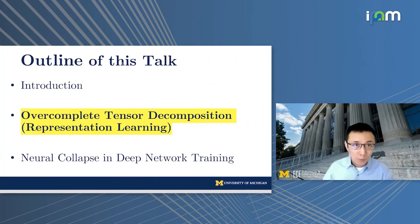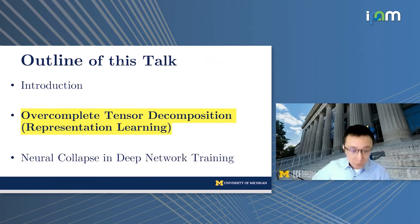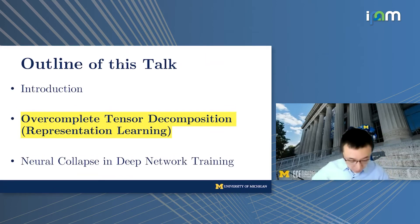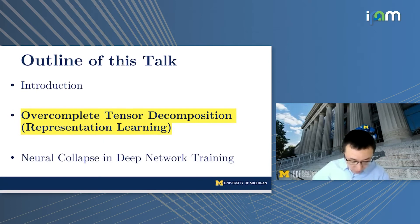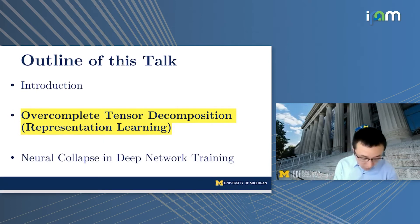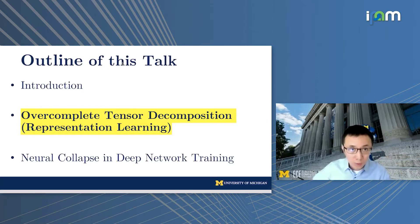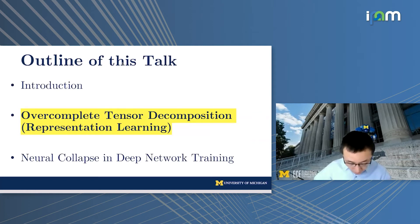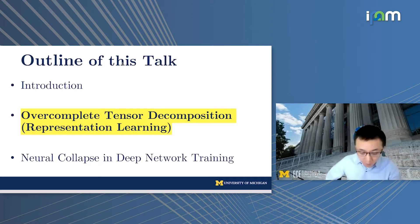In this talk, I want to discuss two recent progress along this line: first, over-complete tensor decomposition, and second, the neural collapse phenomenon in deep network training, which under a simple unconstrained feature model also exhibits this kind of phenomenon. I'll also discuss implications of this work.